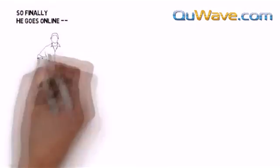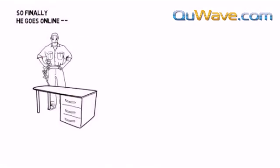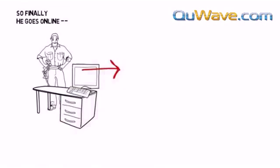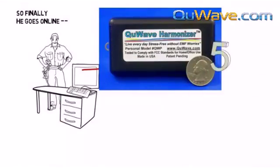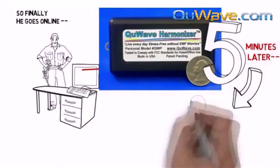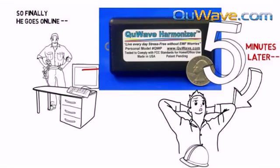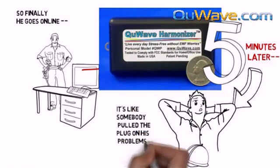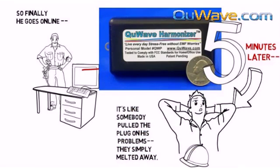Harry finally goes online, scouring the net with his symptoms, and comes up with QWave.com, and bought a gadget called the Harmonizer. As soon as he used it, it's like somebody pulled the plug on all his problems. They simply melted away.